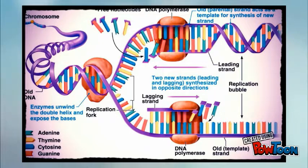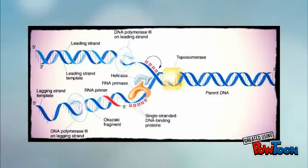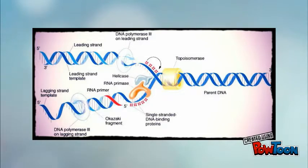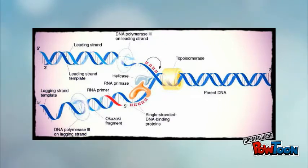This results in a leading strand on top and a lagging strand at the bottom. For the leading strand, DNA polymerase adds matching nucleotides after the primer RNA primase sets a place for the DNA polymerase to start.